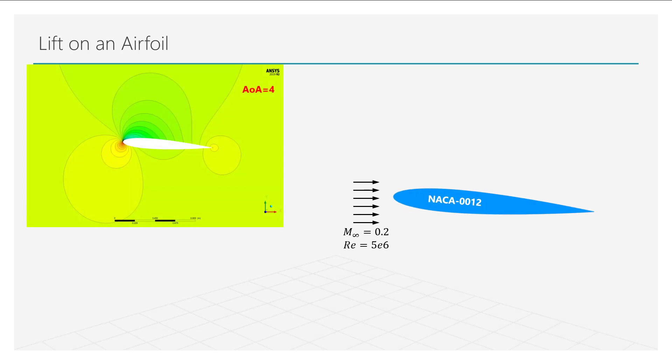Now, as the angle of attack is increased to 4 degrees, we start seeing the formation of a high pressure region, as indicated by the red color, along the lower surface of the airfoil. Simultaneously, a low pressure region, indicated by the blue color, is formed on the upper surface. This imbalance of the pressure leads to a net force on the airfoil, pushing it upwards. We can also see this on the surface pressure distribution plots, where we can observe a negative peak along the upper surface and a positive peak on the lower surface.